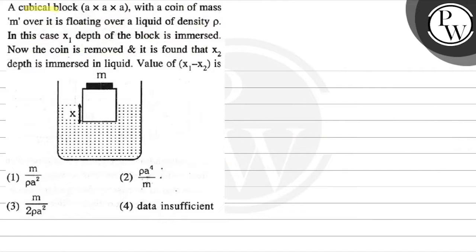A cubical block of a × a × a with a coin of mass small m over it is floating over a liquid of density ρ. In this case, x1 depth of the block is immersed. Now the coin is removed and it is found that x2 depth is immersed in the liquid. Find the value of x1 minus x2.